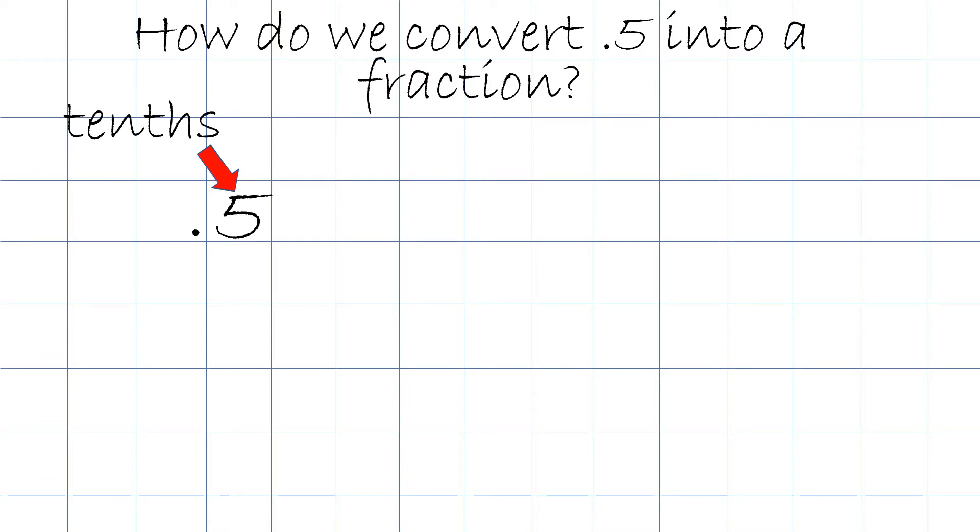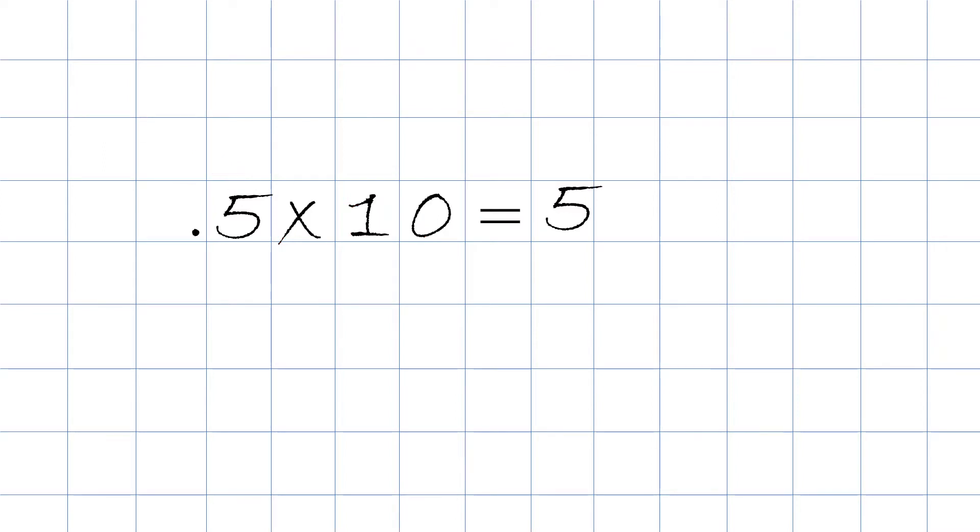And so, what we do, since it's the tenths, we multiply it by 10. When we have 0.5 times 10, the answer will be 5. We then take the answer 5 and we make it into a fraction. Since we multiply it by 10, we just draw the little line and we put the 10 on the bottom.